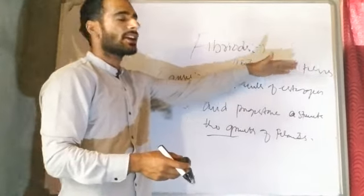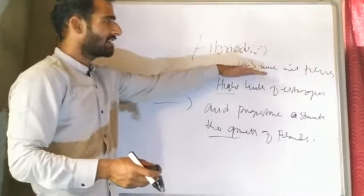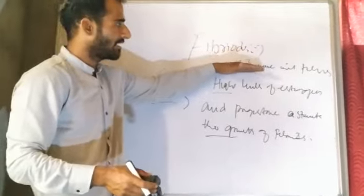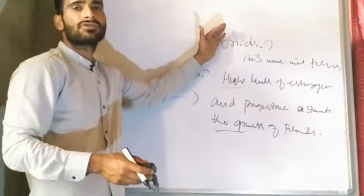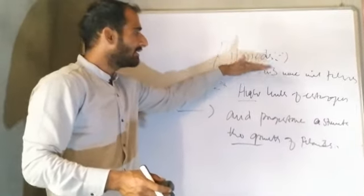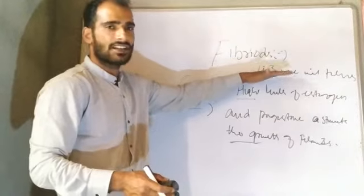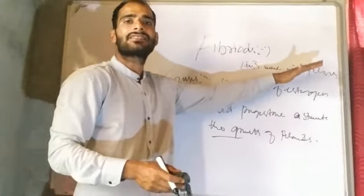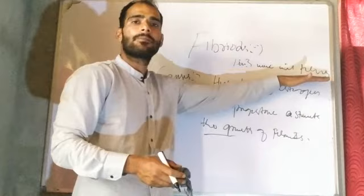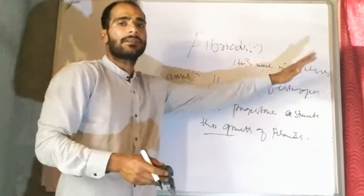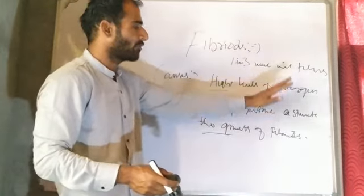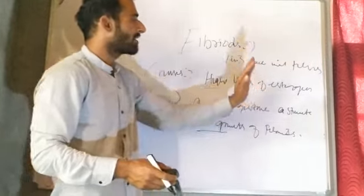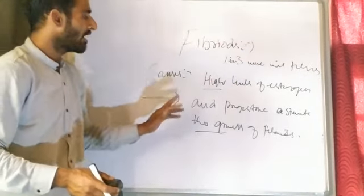Fibroids are usually asymptomatic, so that doesn't mean that fibroids do not exist — they exist. Studies have shown that one in three women develop fibroids at some part of their life, and they most commonly develop between ages 30 to 50. Fibroids are usually asymptomatic.